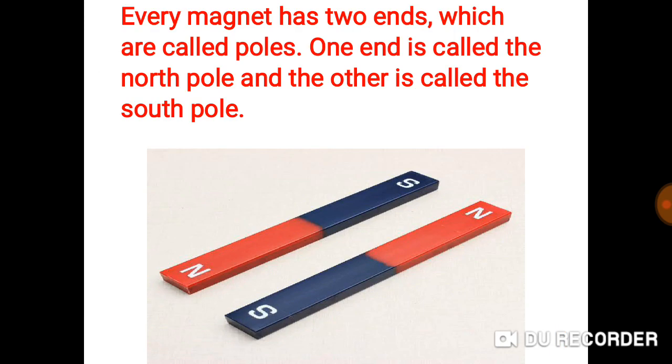Every magnet has two ends which are called poles. One end is called the north pole and the other is called the south pole.